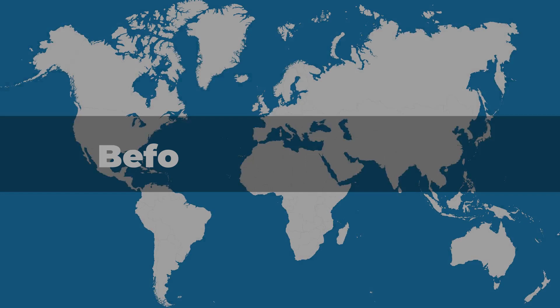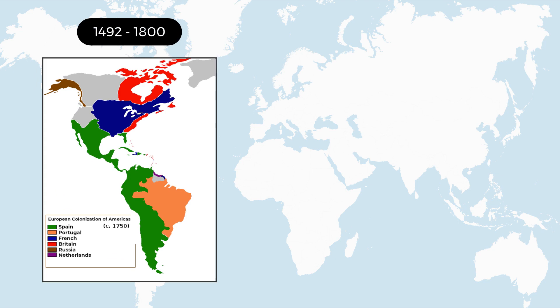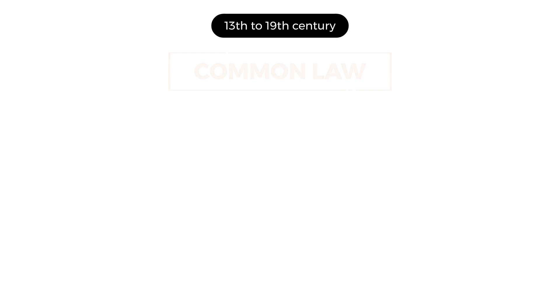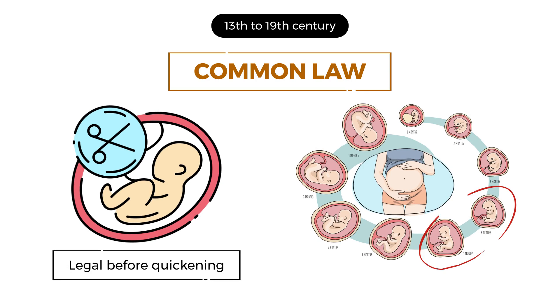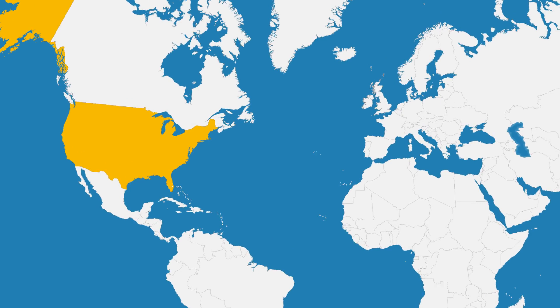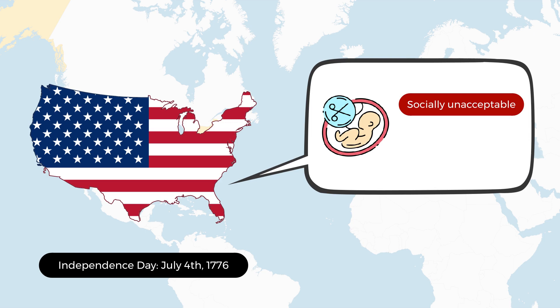Before abortion law, abortion has existed since the European colonization of the Americas, during which there was no abortion law at all. From the 13th to 19th century, by the common law, abortion was legal before quickening — the point at which the fetus starts moving, usually at around four or five months of pregnancy. After the United States gained independence from England in 1776, abortion was viewed as socially unacceptable but not illegal in most states.